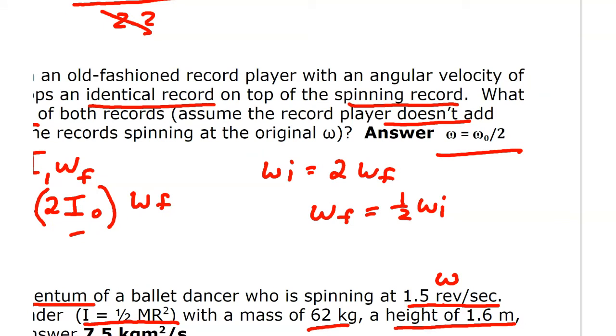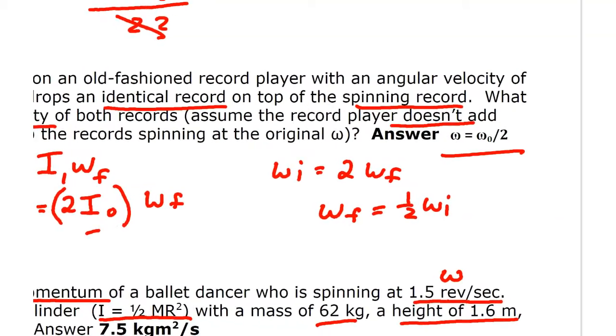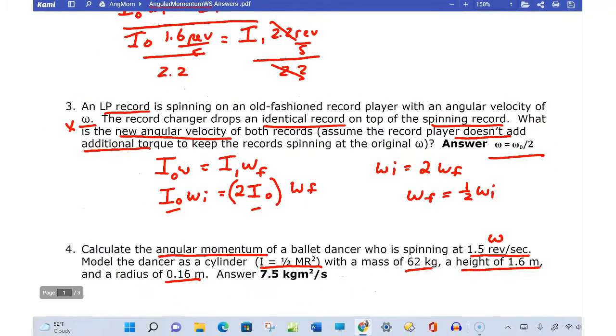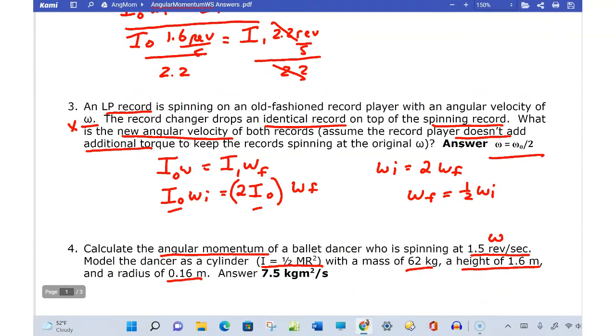So the record falling does not add a net torque to the system. So that tells me the total momentum before with one record and its angular velocity of just ω right here equals the total momentum after. Now you have a second record on here. Now it's two I_0 times a brand new, I would assume, I know the new angular velocity would be smaller with that second. Actually, we found that it's half, half the size of the original with that second record falling on there. We said that the new moment of inertia is not I_0, but two times I_0. So there you go.